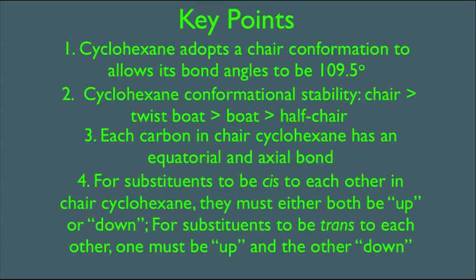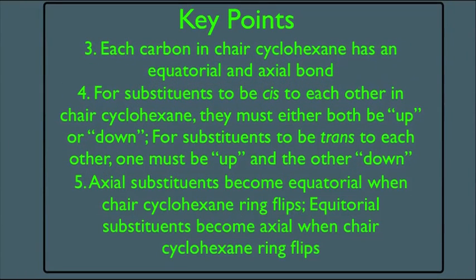We're also going to see, number four, that for substituents to be cis to each other in chair cyclohexane, they must either both be up or down. And opposite: for substituents to be trans to each other, one must be up and the other one must be down. The fifth thing we'll see is that axial substituents become equatorial when chair cyclohexane ring flips, and vice versa, equatorial substituents become axial when chair cyclohexane ring flips.